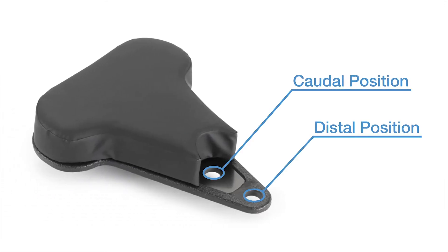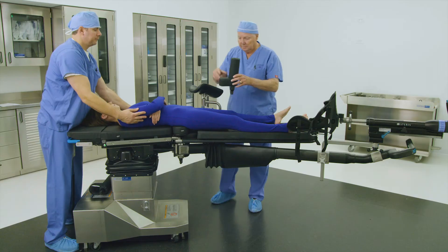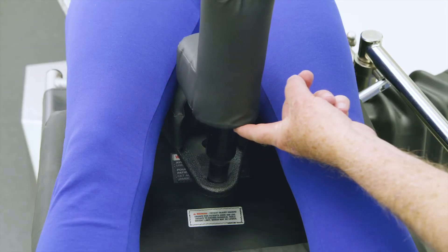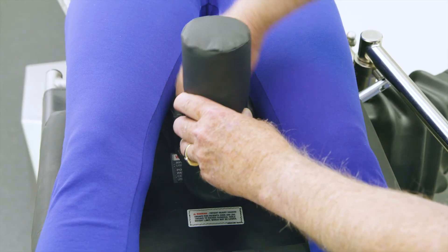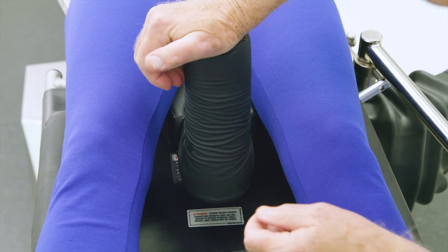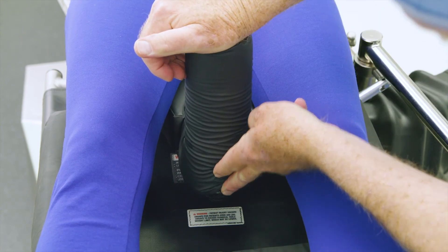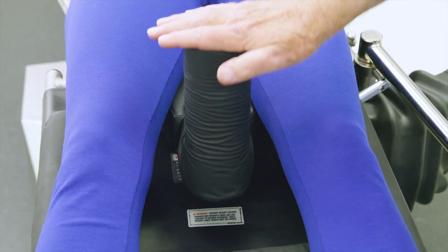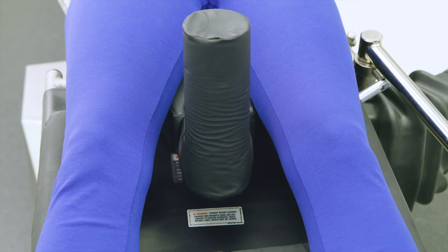There are two positions in the sacral rest to facilitate positioning requirements for a range of patients and to improve imaging area with unobstructed views. Most patients require the post inserted in the distal position. Taller patients typically require the post inserted in the caudal position. Place the desired perineal post and pad into the appropriate hole on the sacral rest and ensure the post is fully seated. Failure to ensure correct placement could result in patient injury during active traction.